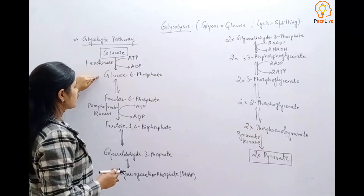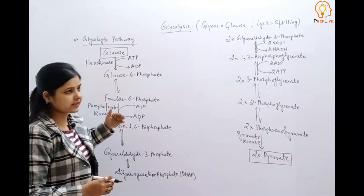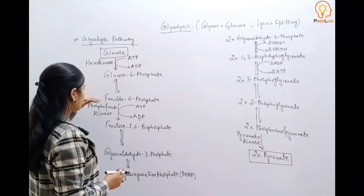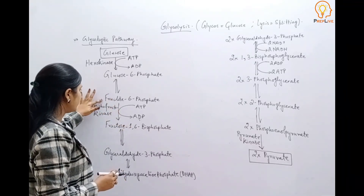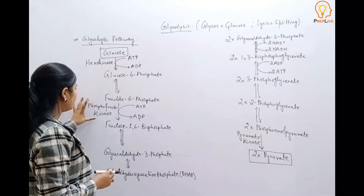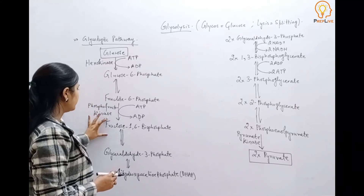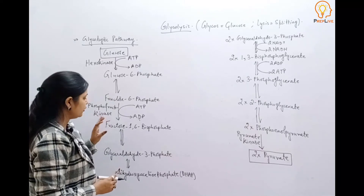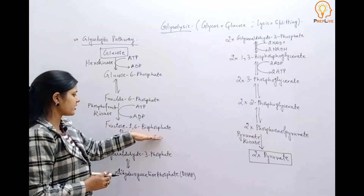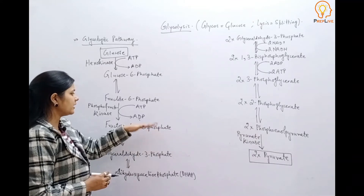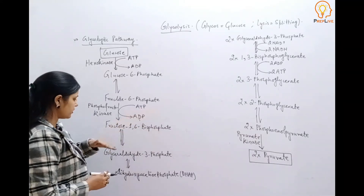After that, this glucose-6-phosphate isomerizes into fructose-6-phosphate. Now this fructose-6-phosphate, with the help of enzyme phosphofructokinase, gets phosphorylated into fructose-1,6-bisphosphate. At this step also, one molecule of ATP is utilized.